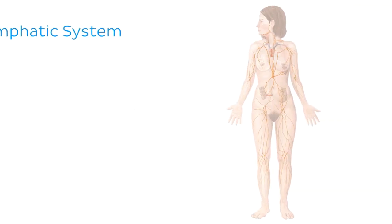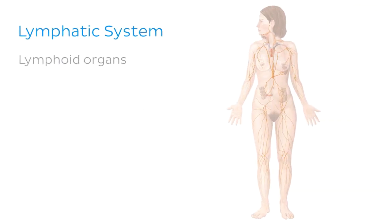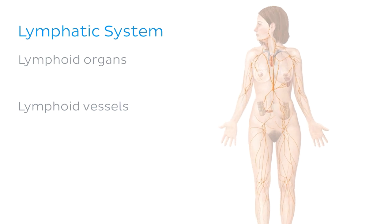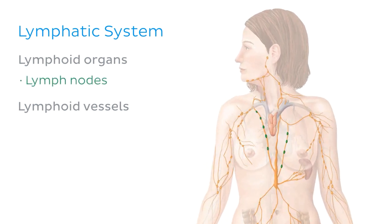The lymphatic system is composed of lymphoid organs and lymphoid vessels. Lymph nodes are secondary lymphoid organs which are widely distributed throughout the body. We can now see them highlighted in green in our image on the right, and I've circled some of them for you in blue.